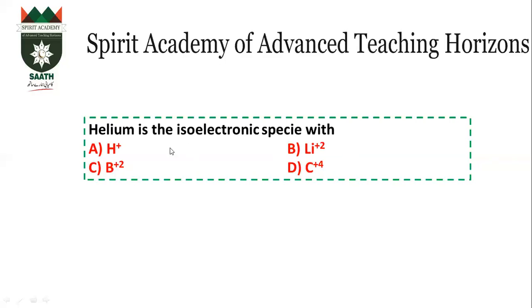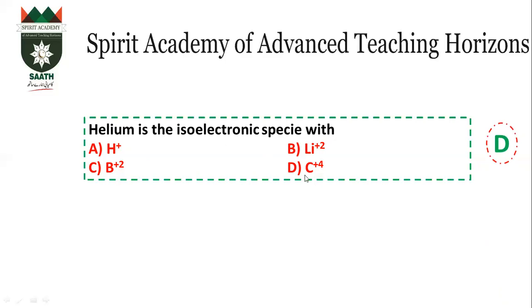Which is the isoelectronic species with helium? Helium has atomic number 2, so it has 2 electrons. Hydrogen has 1 electron. Lithium has 3 electrons, but Li²⁺ has 1. Carbon has 6 electrons, but C⁴⁺ has 2 electrons — same as helium. Isoelectronic means the same number of electrons. So the answer is D.